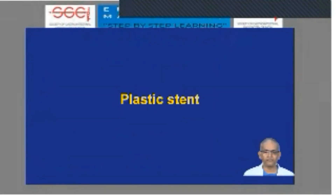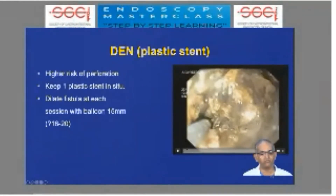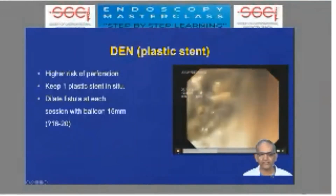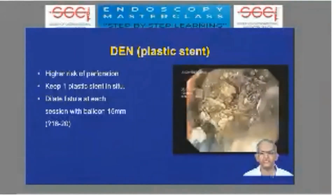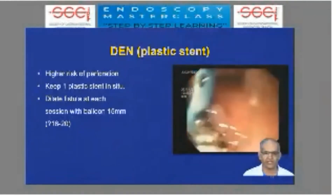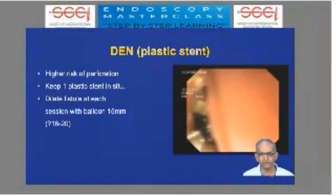For patients who have plastic stents placed, they have a higher risk of perforation compared to those with metal stents because there is no covered stent preventing the risk of leak or perforation. Always remove one stent and keep at least one stent as your target through which you can go inside the cavity. Before entering, if you placed an upfront plastic stent, the fistula may collapse and needs to be dilated to at least 15 millimeters.